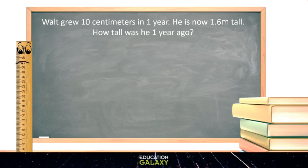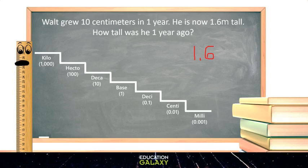Let's convert one and six tenths meters into centimeters. Meters is a base unit and to get to centimeters, I have to go down the stairs to the right one, two steps. So let's move our decimal two spots. There, we get 160 centimeters.